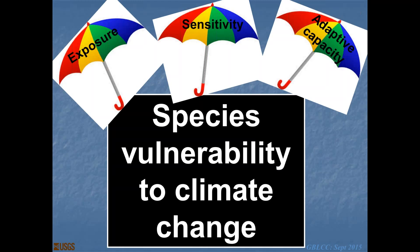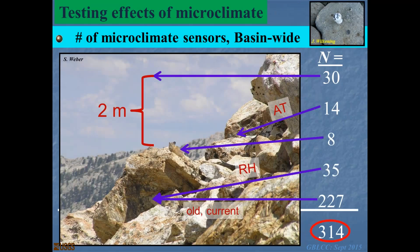Here's what that sensor network looks like: 30 of them two meters off the ground, 14 above the talus but shaded, 8 temperature models with copper around them to represent the heat balance for an individual animal, 35 sensors down in those interstices where the animal mostly lives collecting temperature and relative humidity, and then 227 additional ones down in these interstices at places where they exist now or where they used to exist.